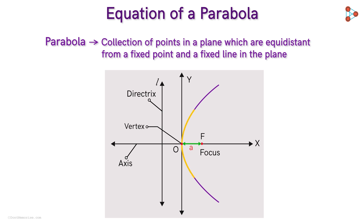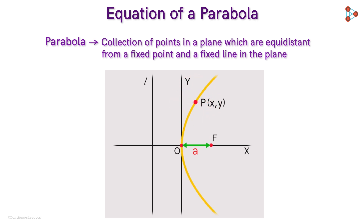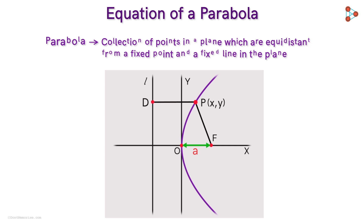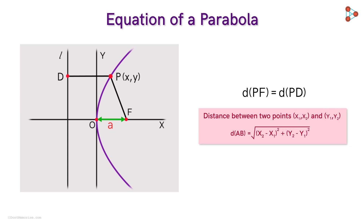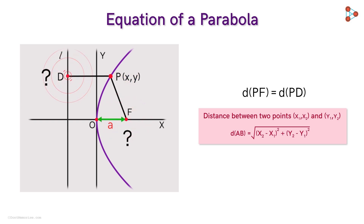Now, to find the equation of this parabola, let us take a point P on the parabola and let its coordinates be x and y. What do we know about this point P? Since the point P lies on the parabola, we know that its distance from the focus F is equal to its distance from the directrix L. So, if we name this point as D, then we get this. To find the equation of the parabola, we need to figure out what these distances are, and for this we can use the distance formula. To apply this distance formula, we need to know the coordinates of points P, F, and D.